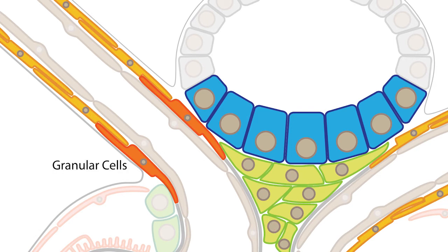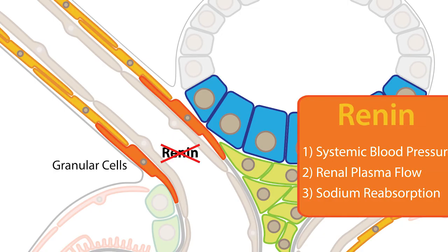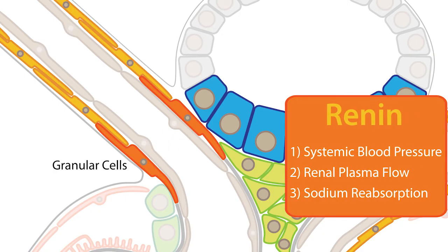In granular cells, calcium suppresses the release of renin. Renin plays an important part in the renin-angiotensin-aldosterone system, which influences systemic blood pressure, renal plasma flow, and sodium reabsorption.